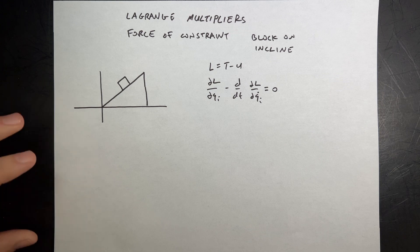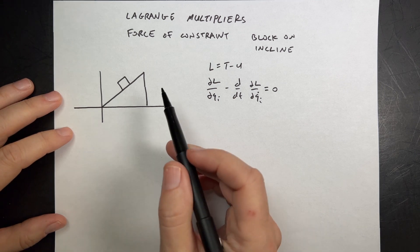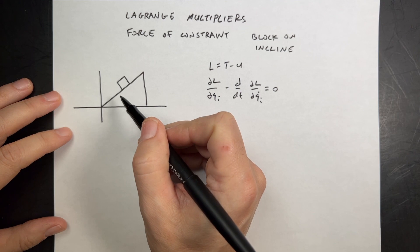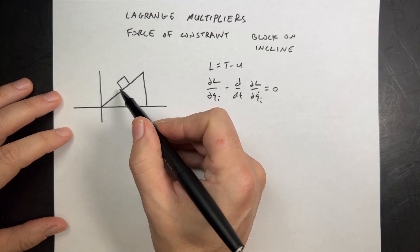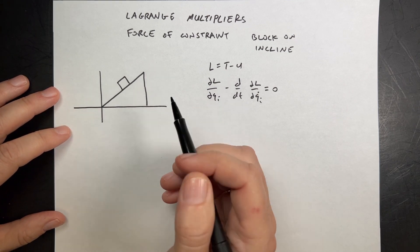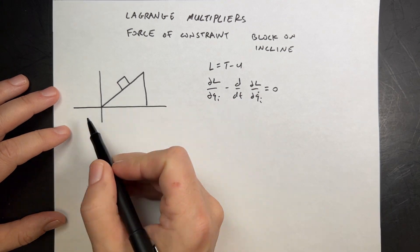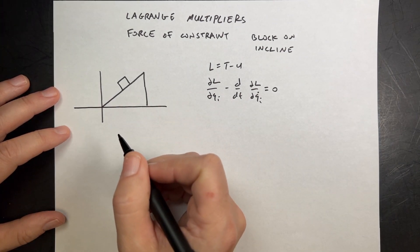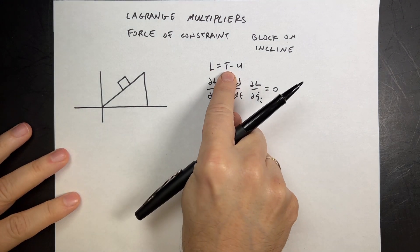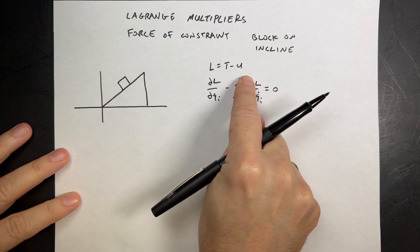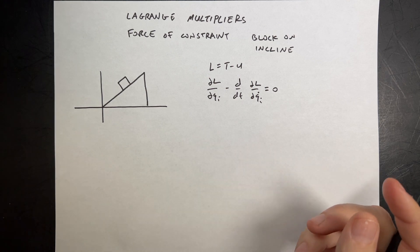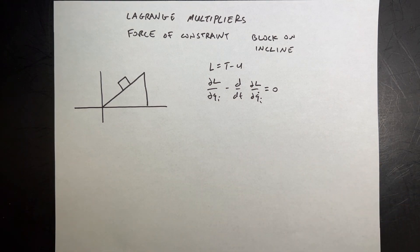Let's quickly review what you would normally do for a situation like this. If I have a block on an incline and I want to do a Lagrangian mechanics problem, I would ask: how many degrees of freedom are there? Then I pick some generalized coordinates. There's just one degree of freedom because it just moves up and down. I would define the kinetic energy, the potential energy, the Lagrangian, and then the Euler-Lagrange equation gives me the equation of motion. It's a constant acceleration problem — not too complicated.